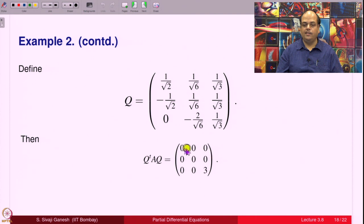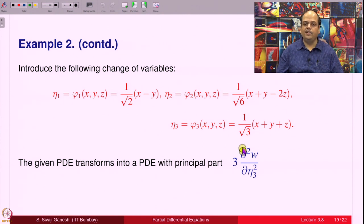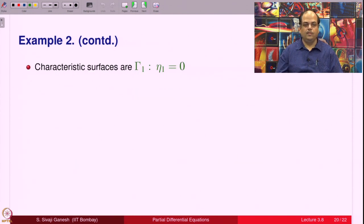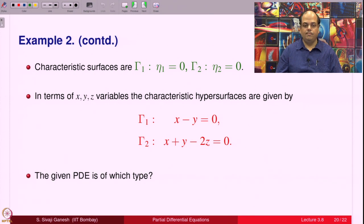With Q^T A Q = diag(0, 0, 3), the change of variables is: φ₁ = (x − y)/√2, φ₂ = (x + y − 2z)/√6, φ₃ = (x + y + z)/√3. The PDE then transforms so that only λ₃ ∂²w/∂η₃² = 3∂²w/∂η₃² survives in the new principal part. The characteristic surfaces are η₁ = 0 and η₂ = 0 (since those terms do not appear in the new PP), which in original coordinates are x − y = 0 and x + y − 2z = 0. The given PDE is therefore of parabolic type.